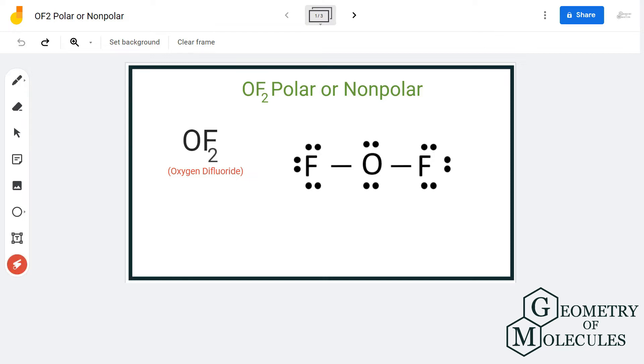Here is the Lewis structure of the molecule in which the oxygen atom is in the center and fluorine atoms are on the outside. To see if these bonds are polar or non-polar, we will check the difference of electronegativities for both atoms. Fluorine has an electronegativity value of 3.98 and oxygen is 3.44. If we calculate the difference, it is higher than 0.5, which makes these bonds polar.